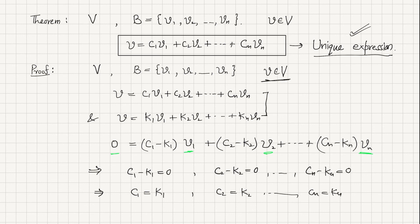This theorem ensures us that each vector will have its own coordinates in the vector space. We can see this geometrically. Let's talk about R2 so that we will have a clear visualization of these coordinates.